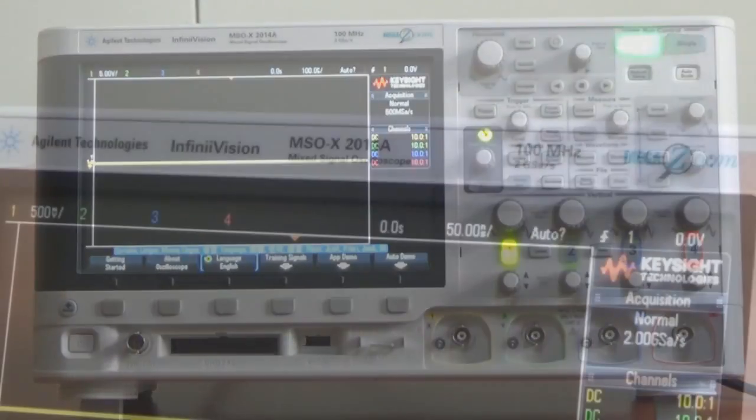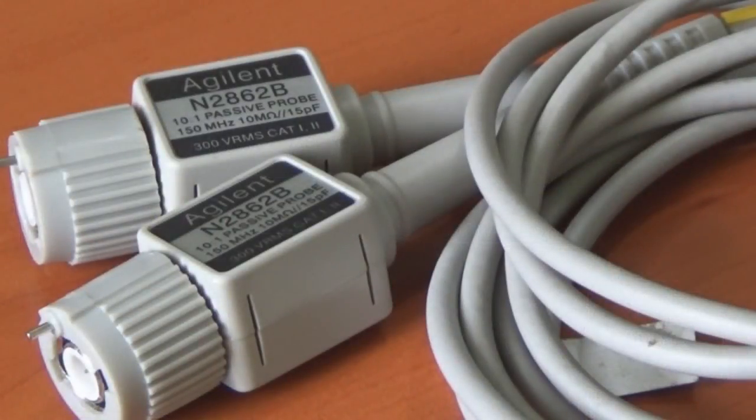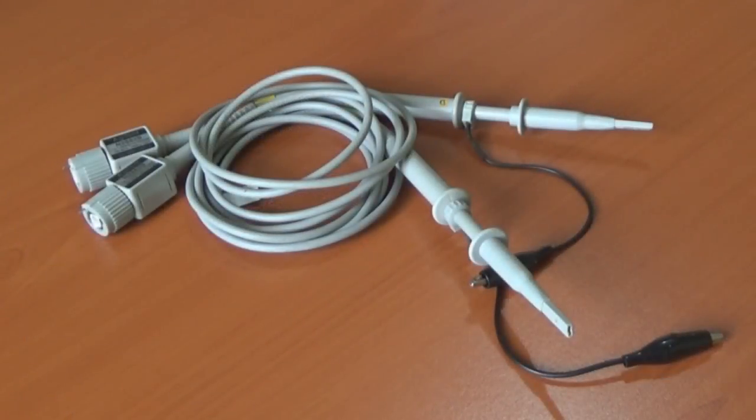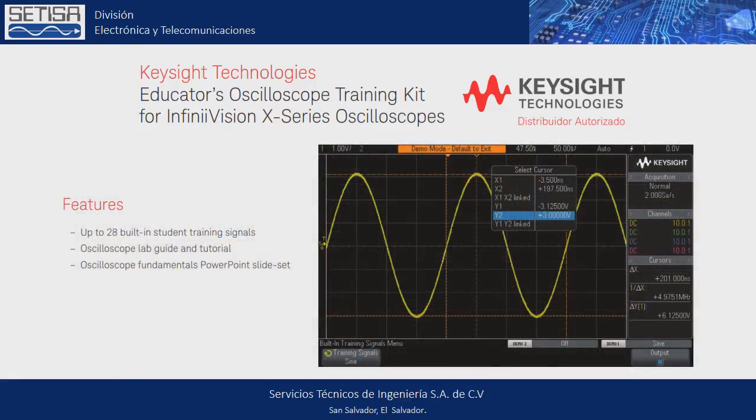Para la realización de este laboratorio y los siguientes utilizaremos un osciloscopio Keysight InfiniiVision MSO 2014A con sus sondas respectivas y la licencia de entrenamiento educativo DSOX EDK de Keysight Technologies. Es importante mencionar que la licencia de entrenamiento de DSOX EDK proporciona una gran variedad de señales de formación integradas para que los estudiantes, técnicos y profesionales aprendan a realizar mediciones básicas y utilizar el osciloscopio eficazmente.